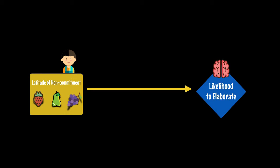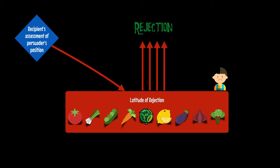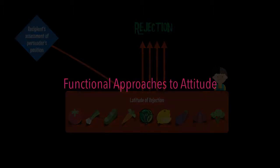When a proposition falls within a recipient's latitude of non-commitment, persuasion will depend on his likelihood to elaborate on the merits of the proposition. This is the central tenet of the elaboration likelihood model. Before we proceed with explaining this model, let us go back and consider the case in which a proposition falls within a recipient's latitude of rejection. In this case, persuasion is simply not possible. To affect behavior, a persuader must create a new proposition. Functional approaches to attitude suggest that in order to change intention, a persuader needs to assess a recipient's attitude function first, then adapt the message so that it no longer attempts to change an attitude that is seemingly immutable, but to change the function this attitude serves.